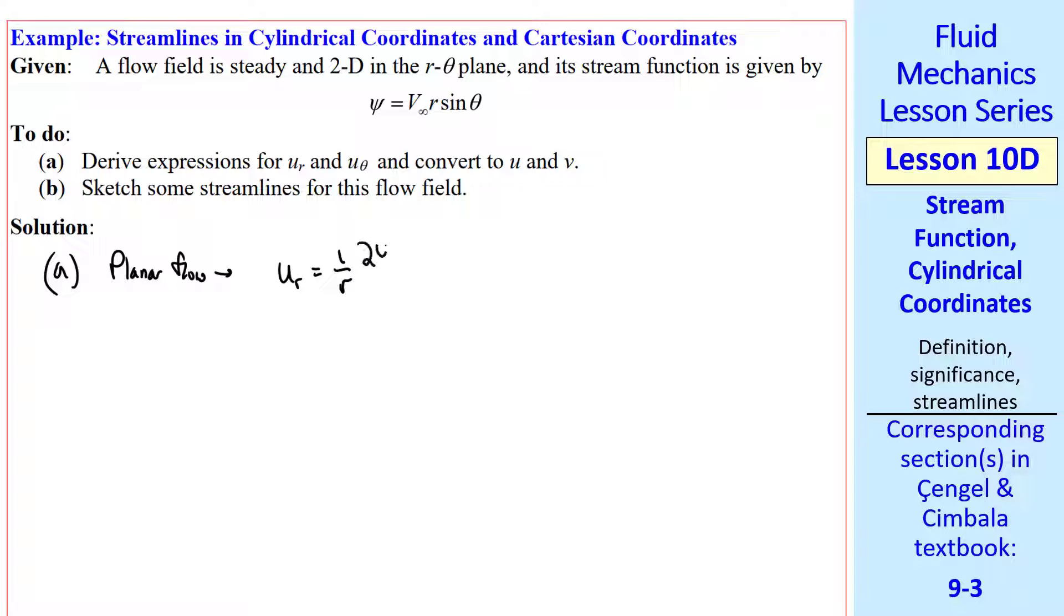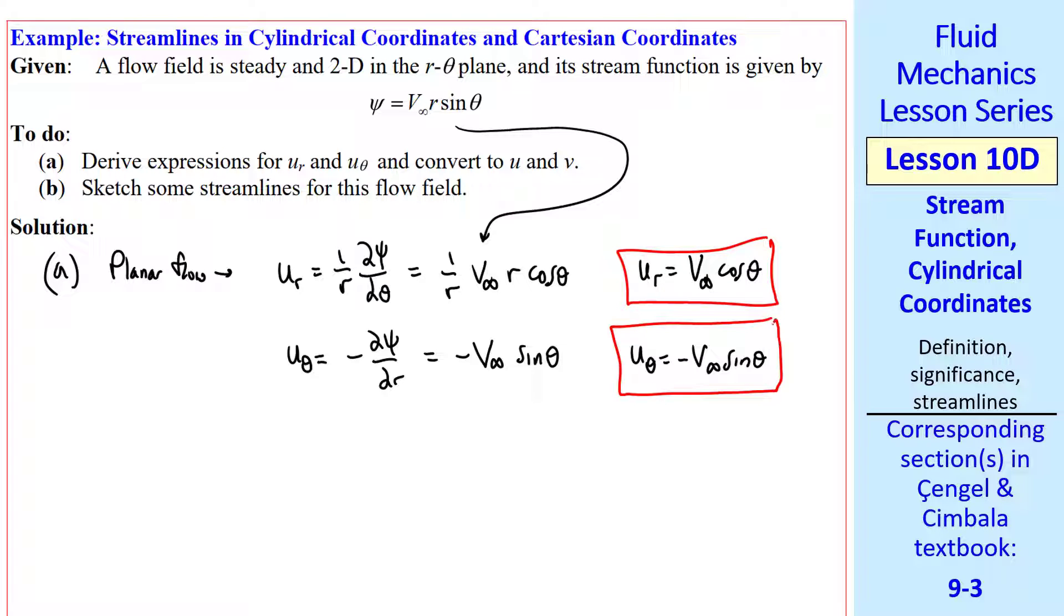Namely, U_R is 1 over R del psi del theta. So from this equation, del psi del theta is V_theta R cosine theta. So U_R is V_theta cosine theta. Similarly, U_theta is minus del psi del R, which from our given psi is minus V_infinity sine theta. So that's our answer for U_theta.